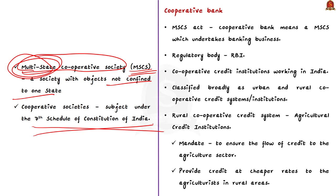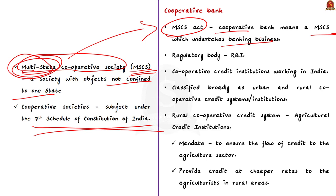The MSCS Act was passed in 2002. According to this act, a cooperative bank is an MSCS (Multi-State Cooperative Society) which undertakes banking business — this is the official definition of a cooperative bank. RBI is the regulatory body for the Indian cooperative banking industry. Cooperative banks are cooperative credit institutions working in India, and they can be classified into two broad categories: urban cooperative banks and rural cooperative banks.